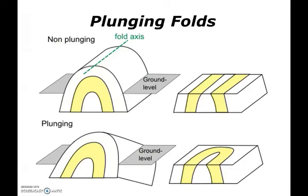Not all folds are non-plunging. Note that the top fold on this image is non-plunging, and the eroded surface will produce parallel outcrops. In the case of a plunging fold, as seen on the bottom of this image, the fold axis is no longer horizontal. As this type of fold is eroded, rather than parallel outcrops, the pattern we will see will be a U shape. In this case, this is a plunging anticline, although synclines can also be plunging and form similar outcrop patterns.